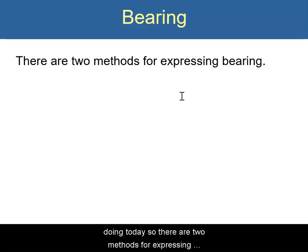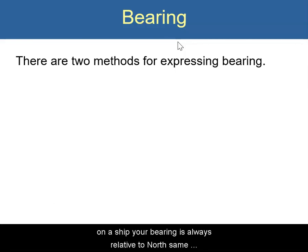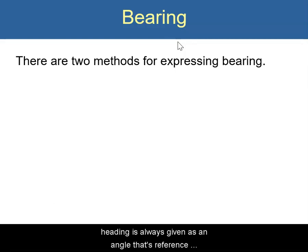There are two methods for expressing bearing. Bearing is basically the direction that you're going. For instance, if you're out at sea on a ship, your bearing is always relative to north. Same thing for if you're flying a plane — the direction you're heading is always given as an angle referenced relative to due north.